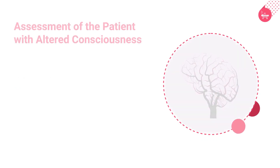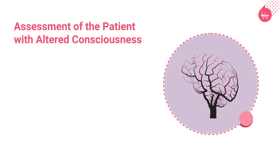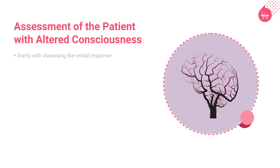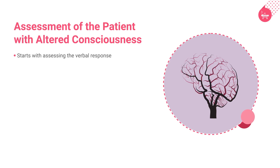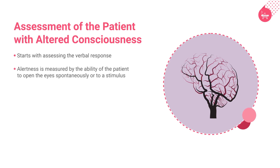Assessing the patient with altered consciousness differs for every patient. Assessment starts with assessing the verbal response, which includes determining the patient's orientation to time, person, and place. Alertness is measured by the ability of the patient to open the eyes spontaneously or to a stimulus.